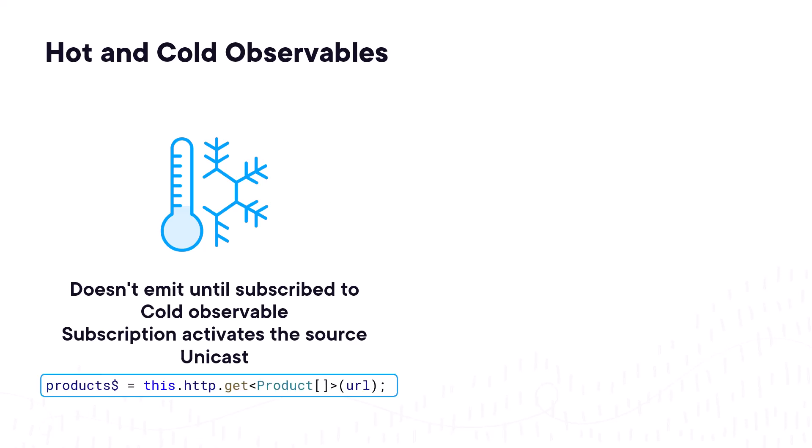The observable returned from an HTTP GET is an example of a cold observable. We must subscribe, or let an async pipe subscribe for us, before it emits any values. Other types of observables activate the source upon creation. They then start emitting right away, even if there are no subscribers.